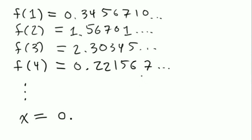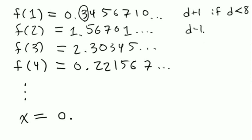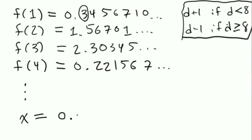I'm going to write down a new number which I'll call x, and I'll write down its decimal representation. This number will not be in my list — it will be a real number not in the image of f, which is a contradiction because I assumed f was onto. Here's the procedure: for the first digit, I look at the first digit of f(1). If d is less than 8, I write down d+1; if d is greater than or equal to 8, I write d-1. So if d is 3, I write 4. Then I look at the second digit of f(2) and change it. Then the third digit of f(3), and so on.